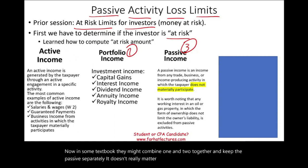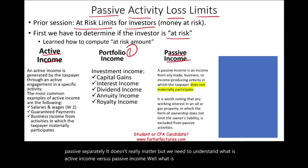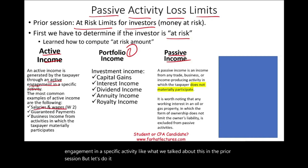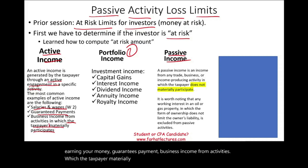We need to understand what is active income versus passive income. Active income is income generated by the taxpayer through active engagement in a specific activity — like salaries and wages, guaranteed payments, and business income from activities in which the taxpayer materially participates. We're going to spend a bit more time in this session defining what materially participate means.